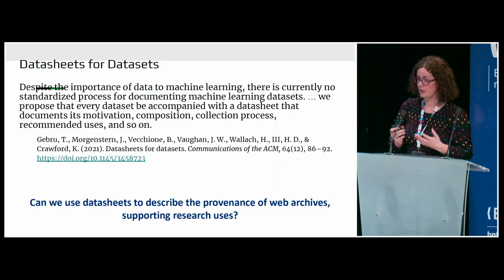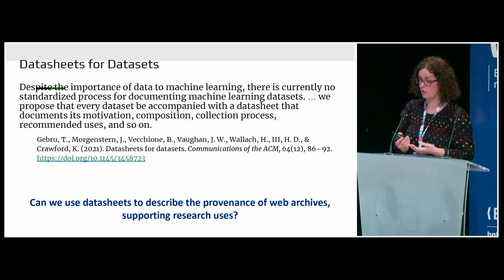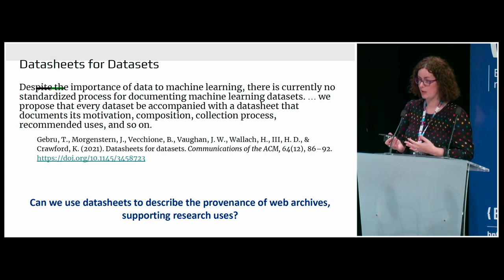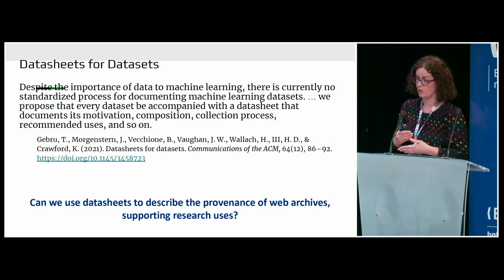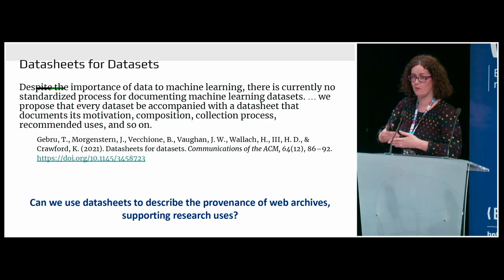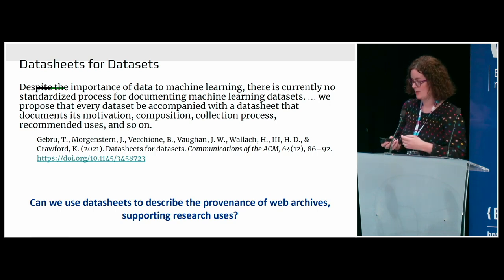Data sheets for datasets is a framework developed by Gebru et al. The reason they developed it was because of the importance of data for machine learning — there's currently no standardised process for documenting machine learning datasets. They proposed that every dataset be accompanied with a data sheet that documents its motivation, composition, collection process, and recommended uses. We were thinking this would be a very good framework to apply to web archives, and whether it would help support research use of web archives, since we make these collections available but the research use isn't always being taken up.